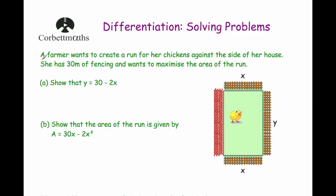So our first example: a farmer wants to create a run for her chickens against the side of her house. She has 30 metres of fencing and wants to create the maximum area for the run. As you can see there's the side of the house and she's going to be using fencing on three sides. The width of the rectangle is X, the length is Y, and the other width is also X because it's equal to the other side.